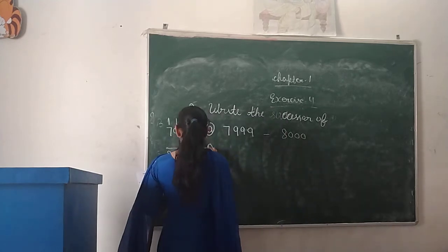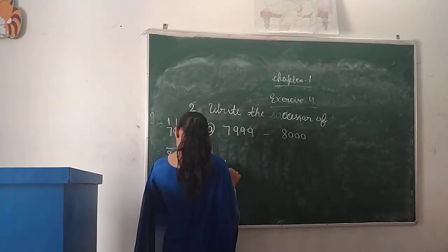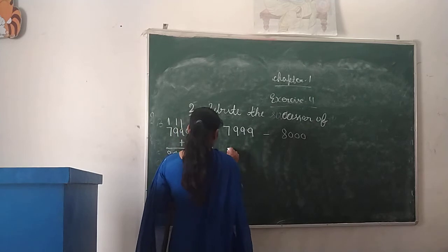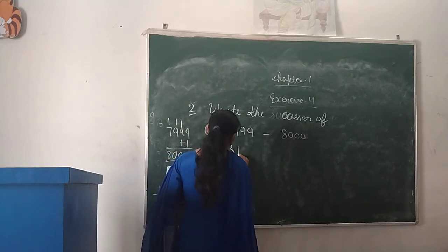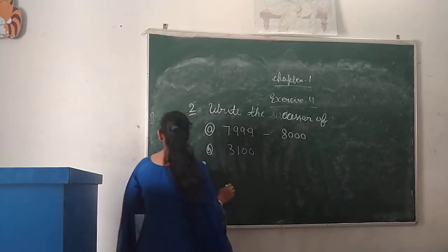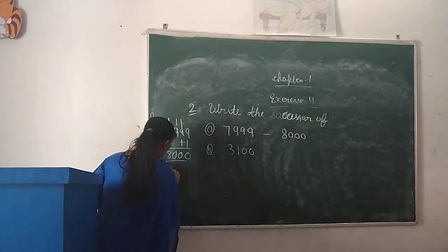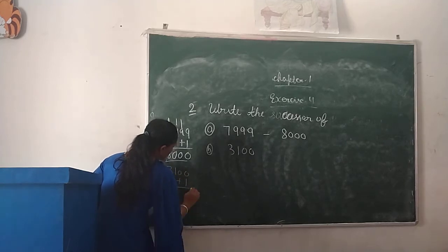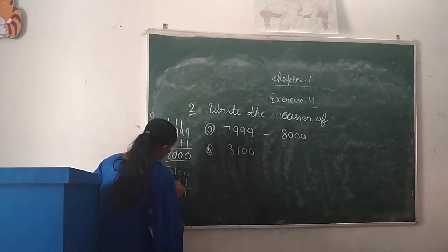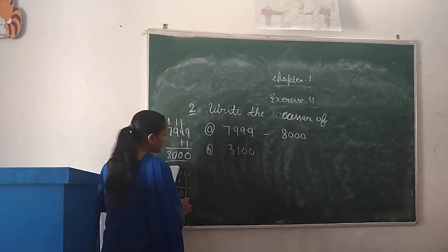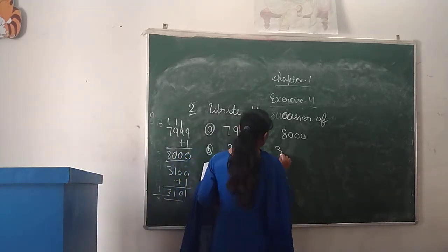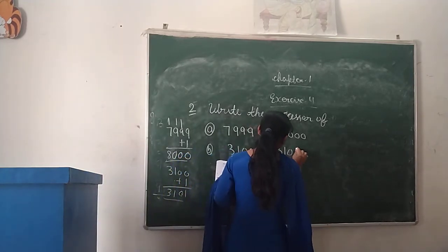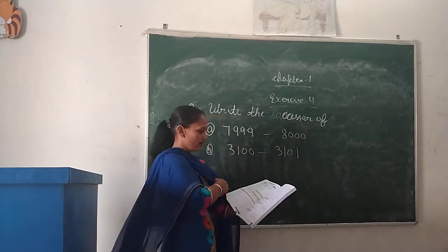Next, Part B: 3,100. We will add 1. 0 plus 1 is 1. The other digits stay the same: 1, 0, 3. So the successor is 3,101.